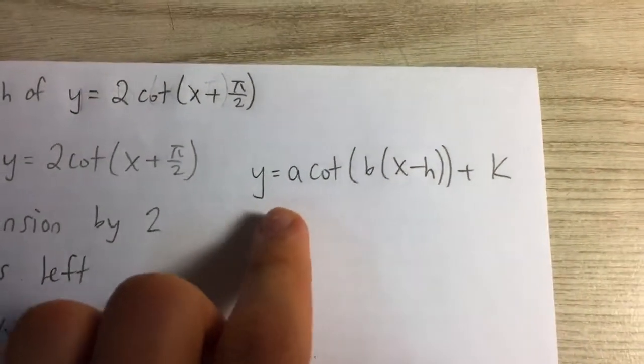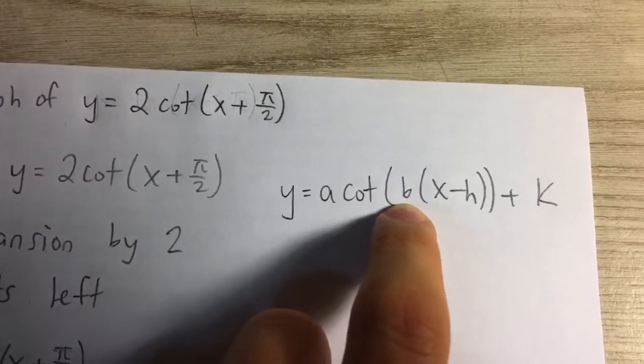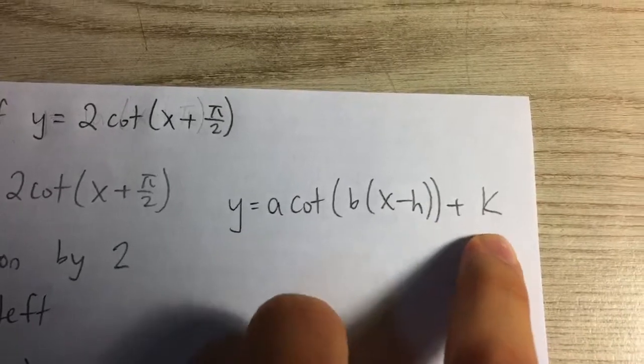And we know that the general form for transformations is we have an a value on the front multiplied by cotangent, and inside we have b times x minus h and then plus k.